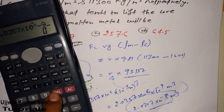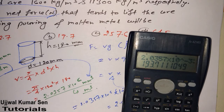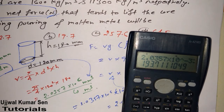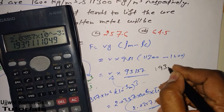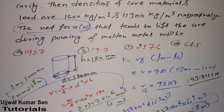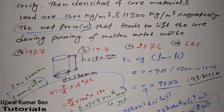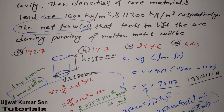Now we substitute: F equals 2.0357 times 10⁻³ times 95157. Since all values are in SI, the answer is in newtons. The result is 193.71 newtons. Matching this with the answer options, the correct answer is option A.